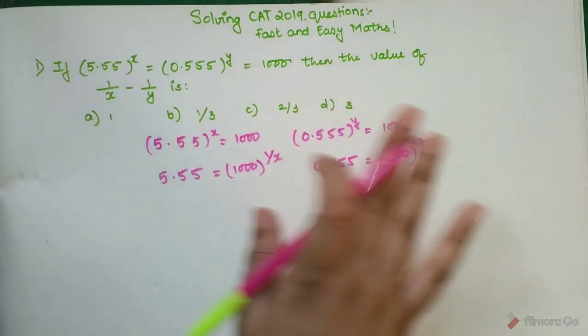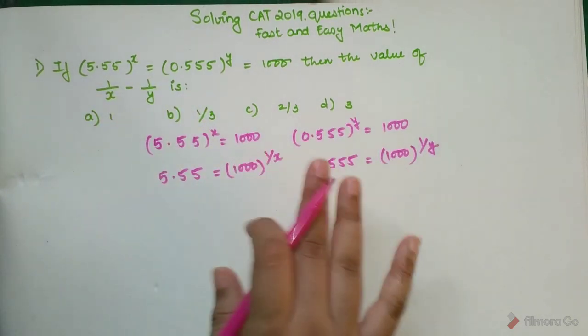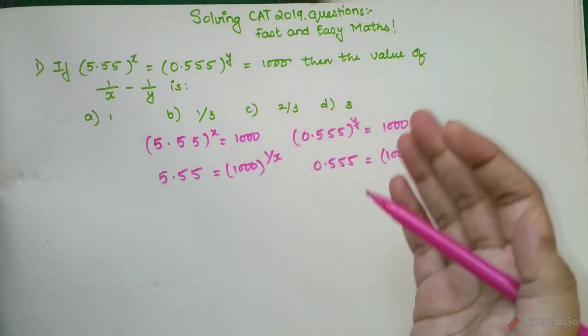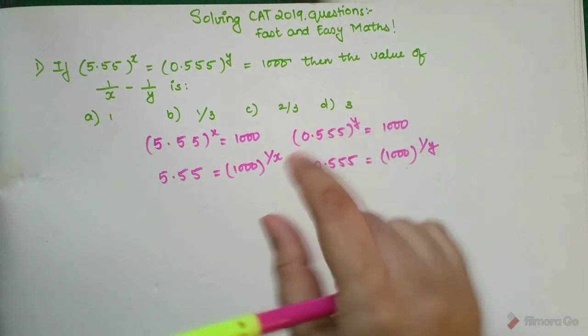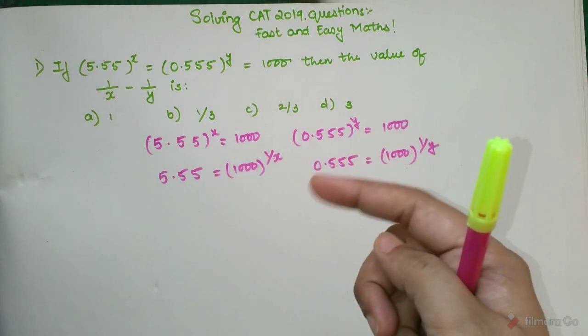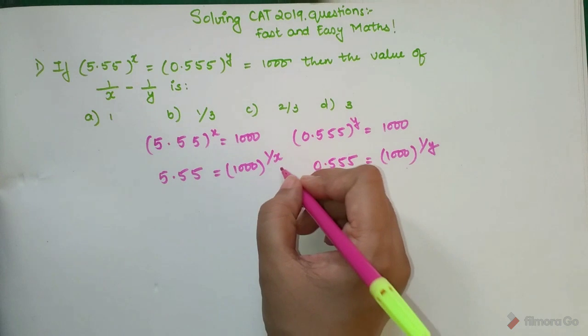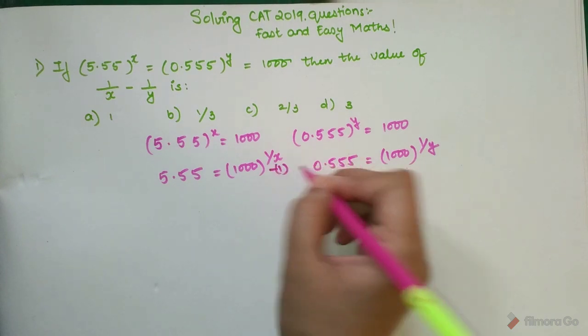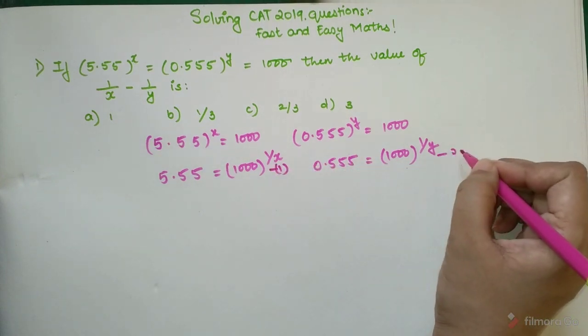Now we need to find out how we get from single 1/x to 1/x - 1/y. Now anybody who knows indices, if we divide things and the base is the same, then the indices can get subtracted. So I will take this as equation 1, this as equation 2.